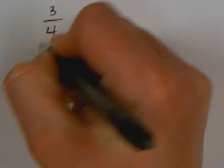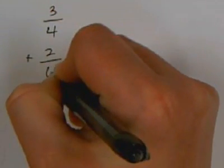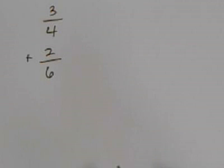So my example for adding and subtracting unlike denominators is 3/4 plus 2/6. I have the students write them up and down so that they have more room to work with.